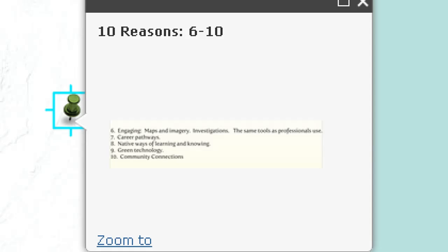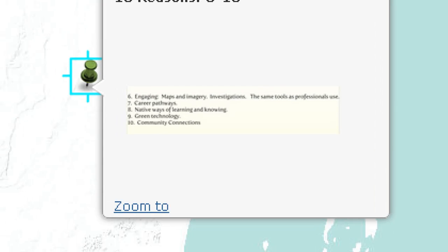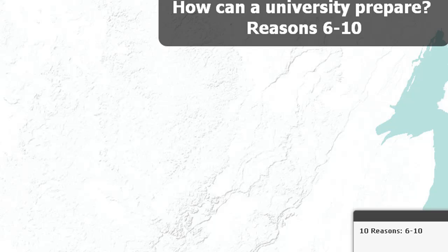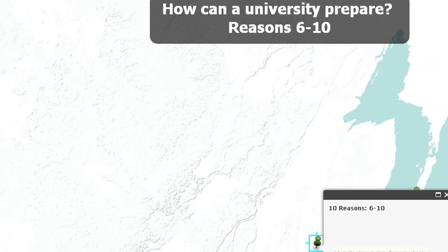GIS provides good career pathways — it's used not just in GIS departments, but in human health, planning, business, and engineering. It's tied to native ways of learning and knowing, a holistic view of the planet where the ecosphere, biosphere, hydrosphere, lithosphere, and human sphere are all connected. It's also a green technology, used to plan solar roofs, wind turbines, and water quality management. And it's a great way to connect to the community, providing information to improve infrastructure and quality of life for all its people.